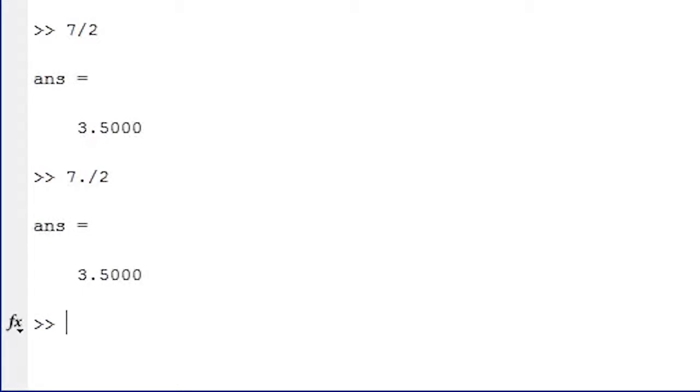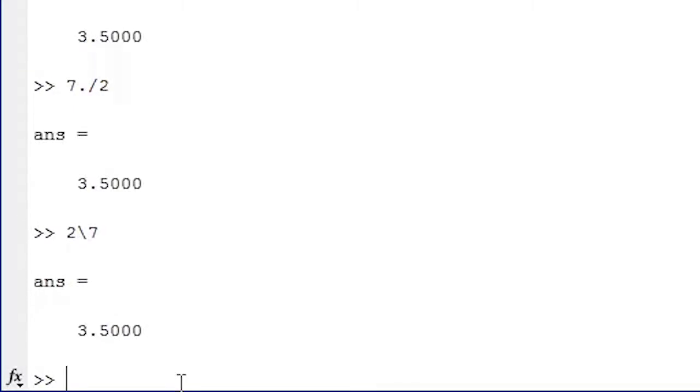Now let's divide seven by two using the backslash operator. To do this, type two backslash seven. We're still taking the number seven, the number on the uphill side of the operator, and dividing it by two. We still get 3.5 as our result. We've just changed the way we do the calculation.